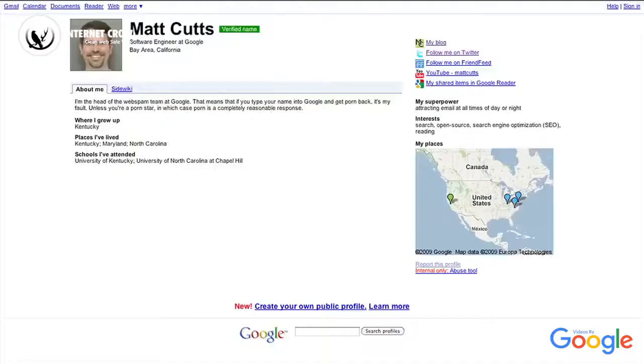Right now, we surface social content that we find in three different ways. The first way, and the biggest in my mind, is your public Google profile. A Google profile is just a place where you can choose to share information about yourself with the world, including a list of your different online social services.